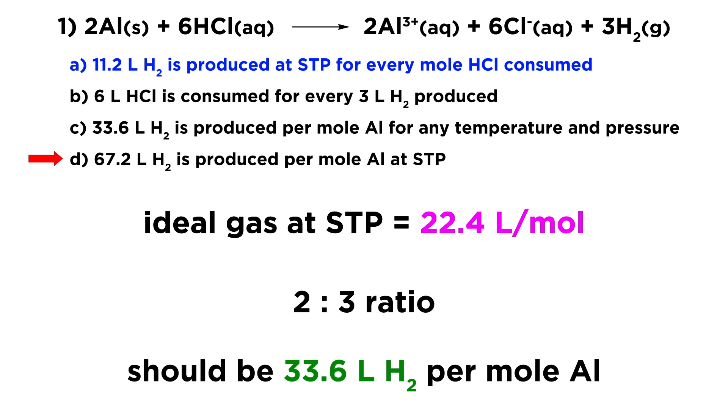And what would 1.5 times 22.4 be? If we have 22.4 liters per mole, then one and a half moles of H2 should be 33.6 liters of H2. So that is what we would expect. Option D is not that. It is not showing the correct number. So A is going to be the answer for the reasons we discussed.